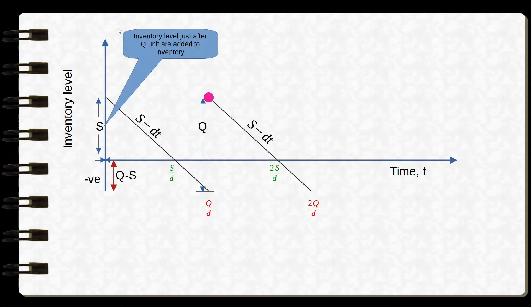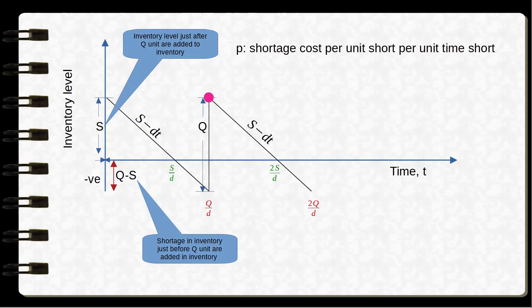Therefore, S is the inventory level just after Q units have arrived in the inventory, because from Q we have cleared a backlog of Q minus S. Q minus S is the shortage in inventory just before Q units have been added. And P is the shortage cost per unit short per unit time short.